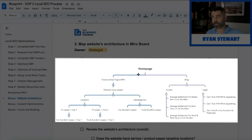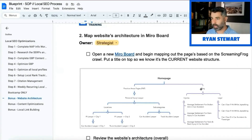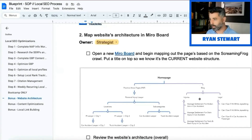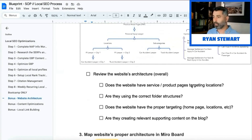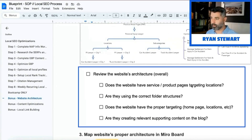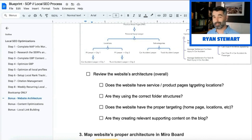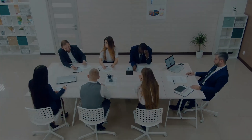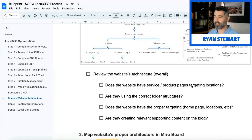We put it into an org chart style page mapping so we can see what all the pages are. Here's a screenshot of what it looks like in Miro — just homepage, pages, blog, etc. Once we have that, we go through this very simple process of reviewing the website's architecture. If this is a franchise location, this can get complex — there are going to be a lot of locations and a lot of pages. We actually have a franchising client with 150 franchisees.